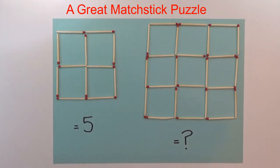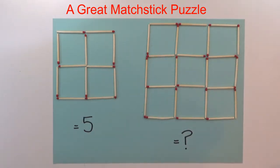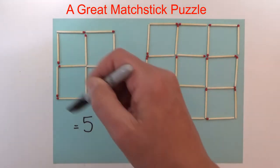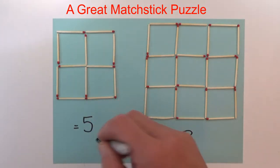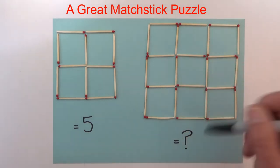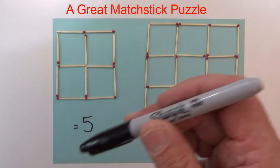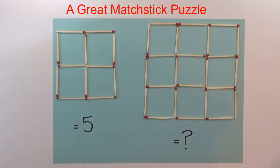Hi there! Today I'm going to share with you this great matchstick puzzle that's based on two groups of matchsticks. The puzzle is: if this left-hand group of matchsticks equals five, then what does this right-hand group of matchsticks equal? If you want to think about the answer, click on the pause button, otherwise I'm going to go straight into the answer.